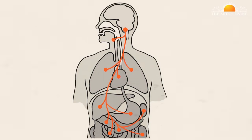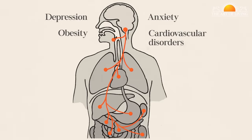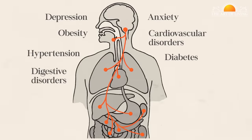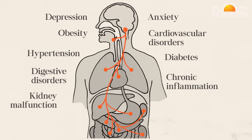When the vagus nerve is not able to perform to the best of its ability, the body and mind become susceptible to a range of diseases like depression, anxiety, obesity, cardiovascular disorders, hypertension, diabetes, digestive disorders, chronic inflammation, kidney malfunction, infertility and even Parkinson's.